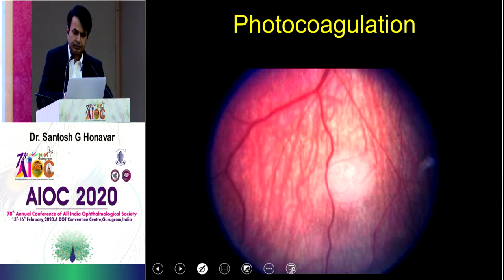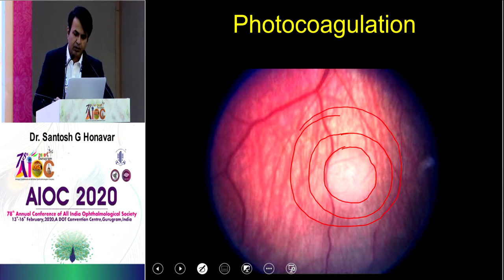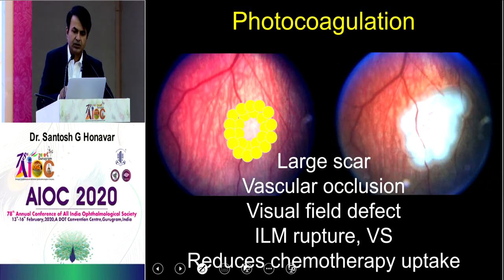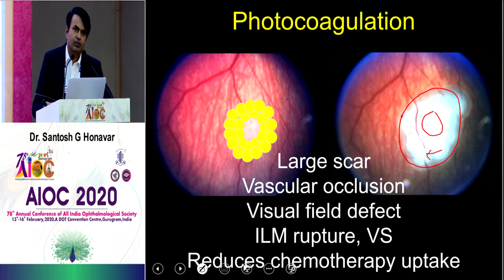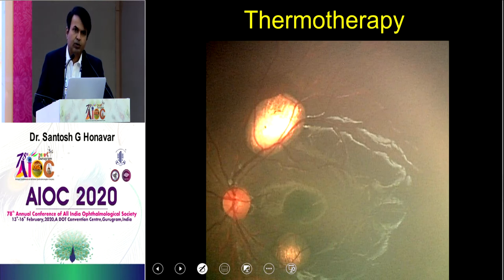Photocoagulation works by cutting off the blood supply to the tumor. You cannot photocoagulate on top, so you do two rows of large-diameter laser burns around the tumor. The resulting scar is about nine to ten times the area of the tumor you began with, and blood vessels are blocked. For a juxtapapillary tumor, photocoagulation will knock off the child's visual field — you will find an inferior arcade scotoma. We have stopped doing photocoagulation and moved on to thermotherapy.